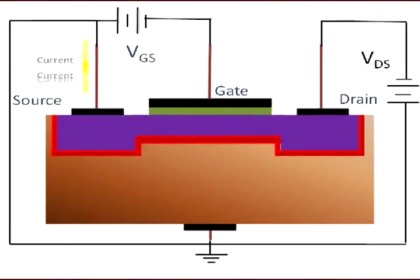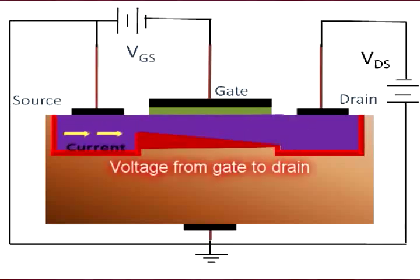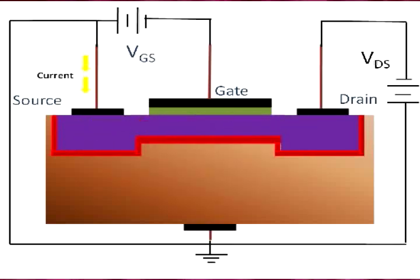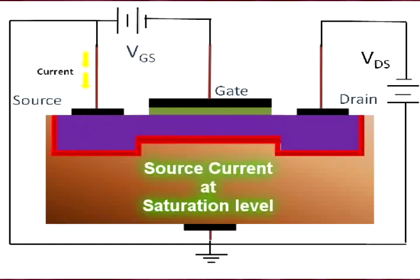The voltage between the gate and the drain end of the channel is now equal to the threshold voltage. The increased channel resistance causes the source current to approach saturation level.